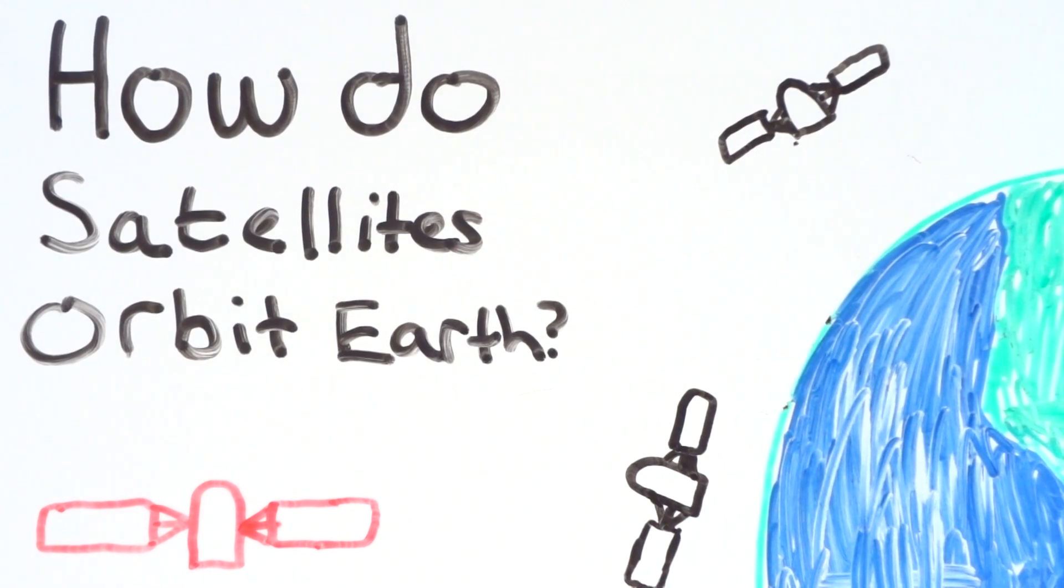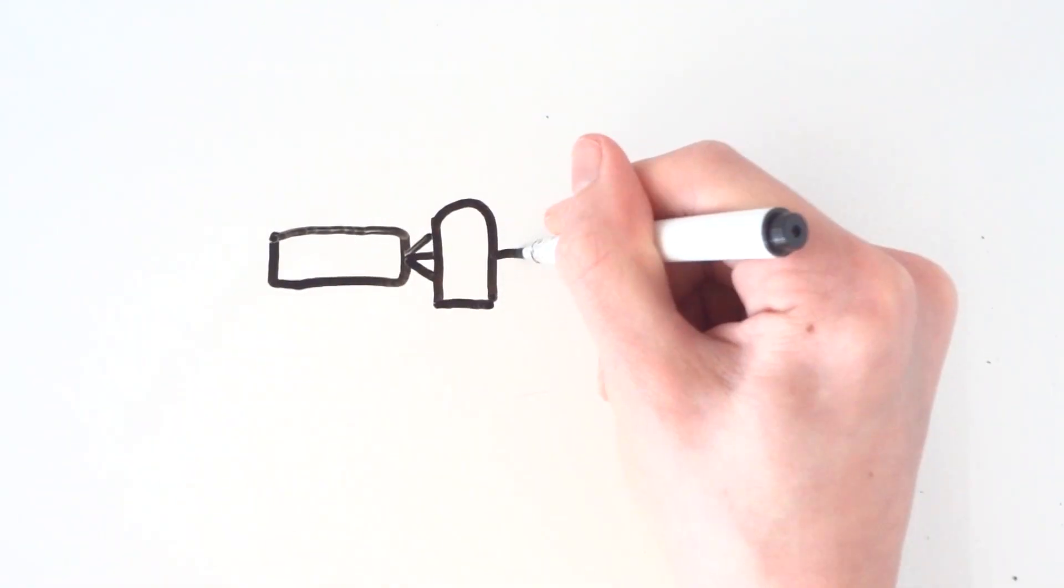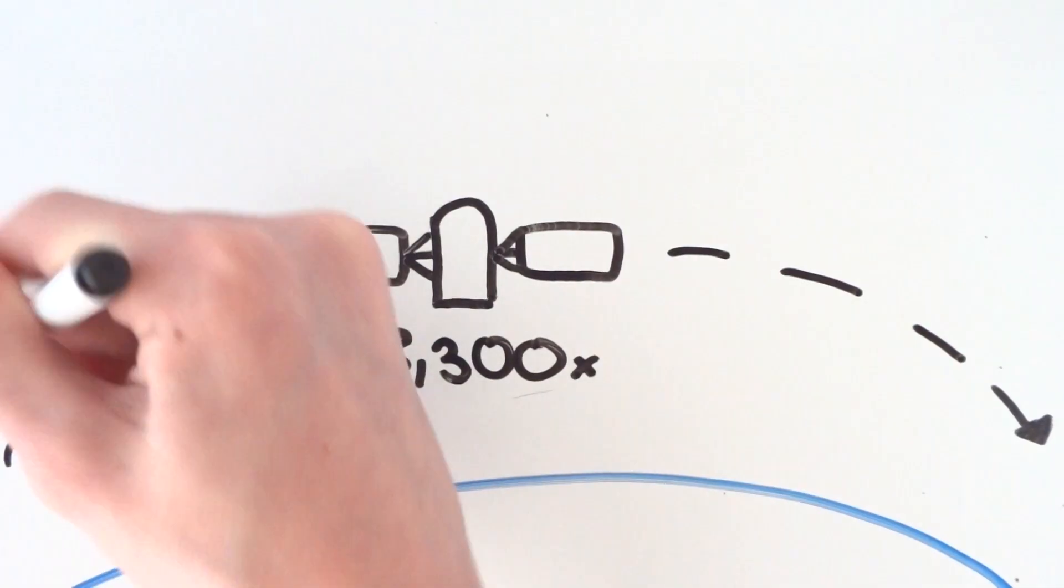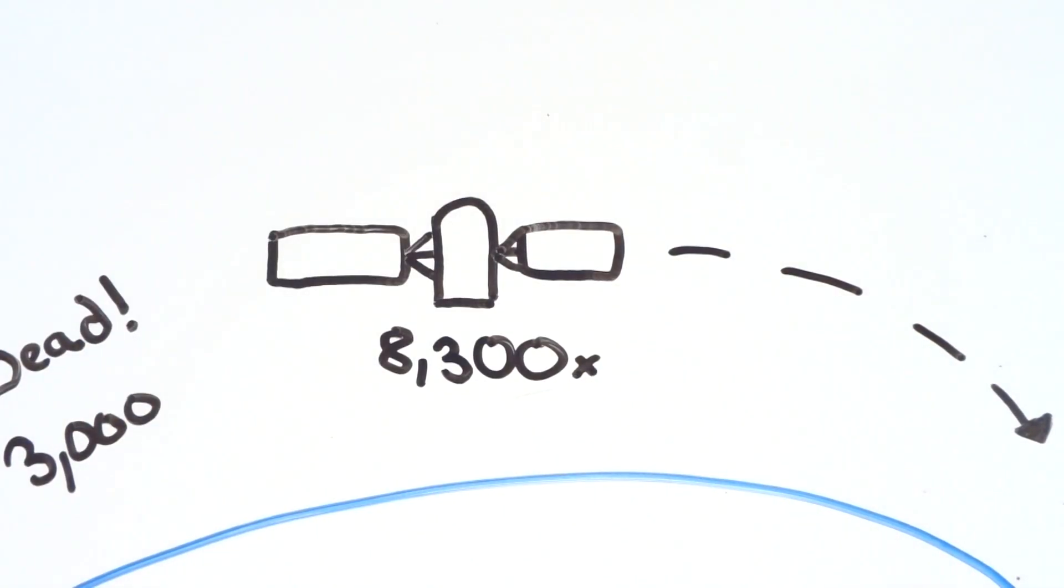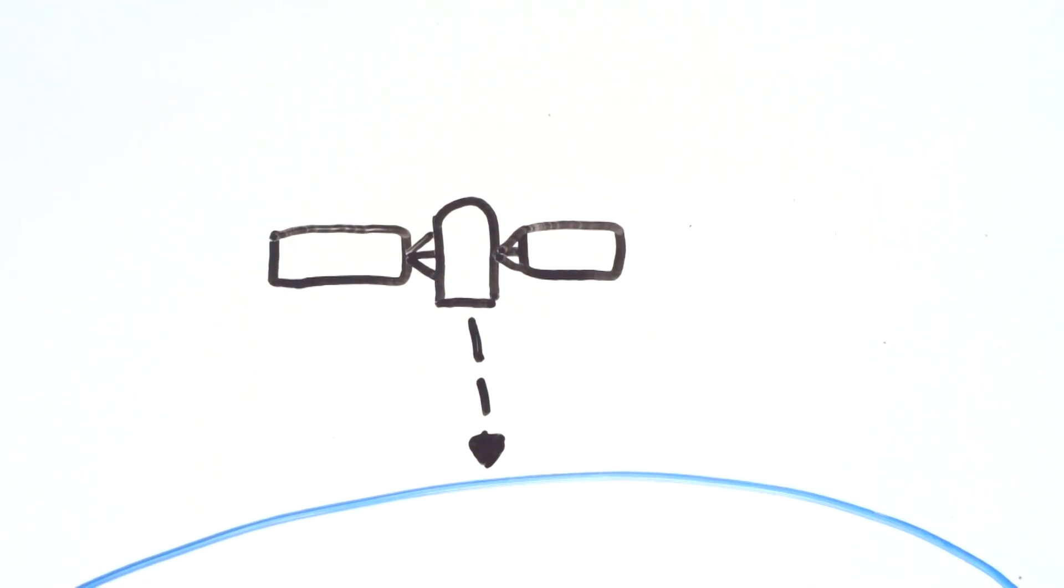You may not realize it, but there are 8,300 artificial satellites orbiting Earth right now, with 3,000 of these currently not operational. So how do these stay up orbiting Earth when we know things should fall down due to gravity?